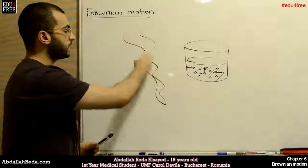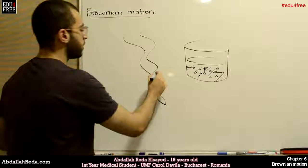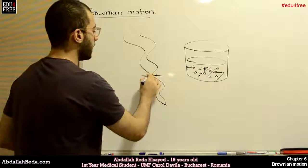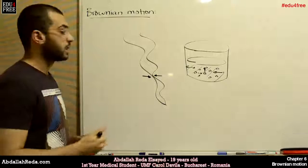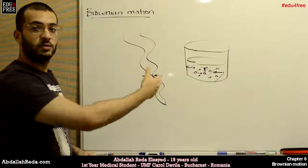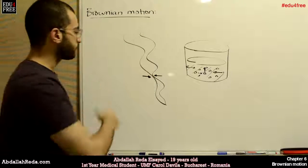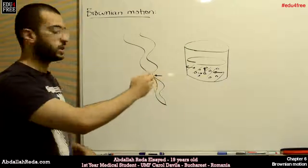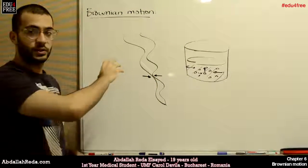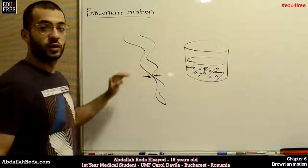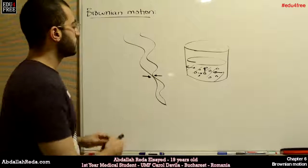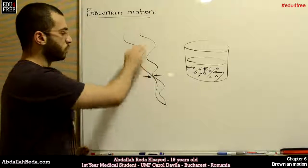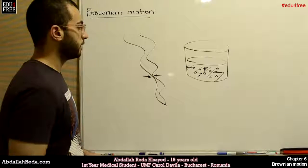So when the number of collisions upon a carbon atom increases, it will force the carbon atom to move in the opposite direction. By the summation of all the vectors of the collisions, it will move to the opposite direction. And this is, of course, according to Newton's law. So this is what causes the smoke to move randomly in the air.